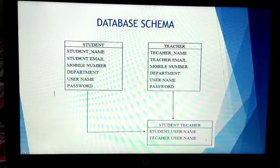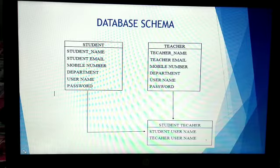On both objects we have different attributes such as name, email, department, username, and password. They both interact under the object student-teacher with their username.